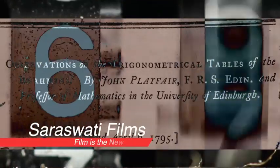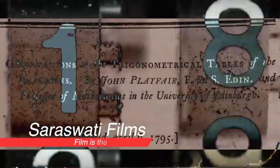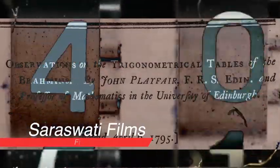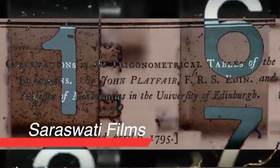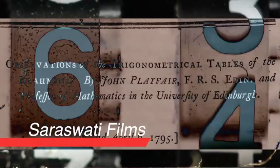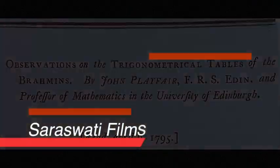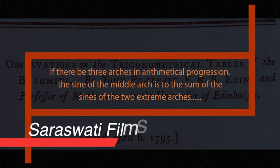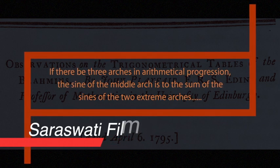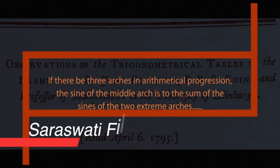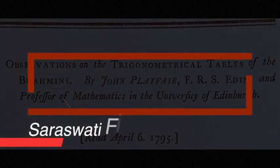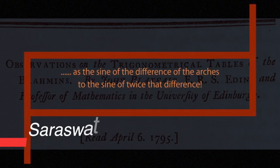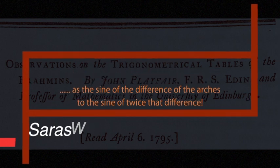In the next series of films, we will deal with how Playfair came to the conclusion that Hindu astronomy and trigonometry was exceedingly old. Here is the theorem on which Hindu trigonometry is based, which is of course very well known today: if there be three arcs in arithmetical progression, the sine of the middle arc is to the sum of the sines of the two extreme arcs as the sine of the difference of the arcs to the sine of twice that difference.